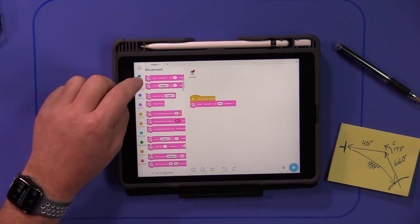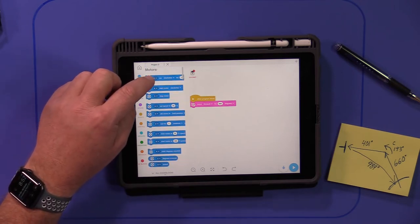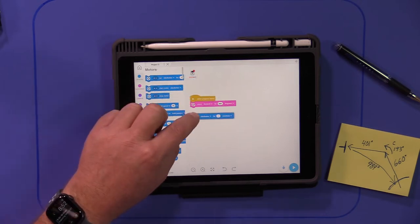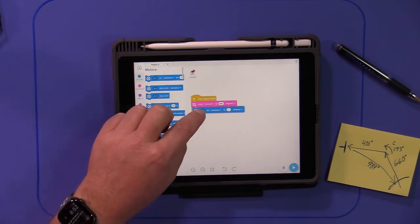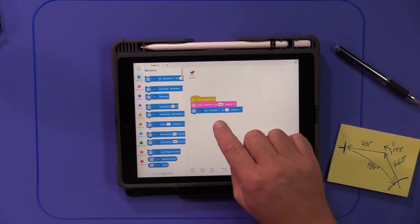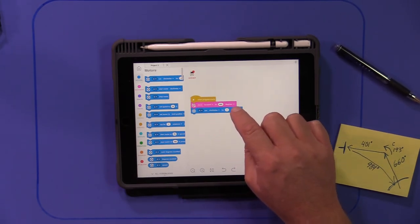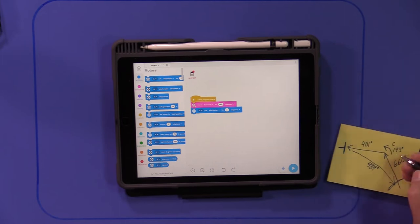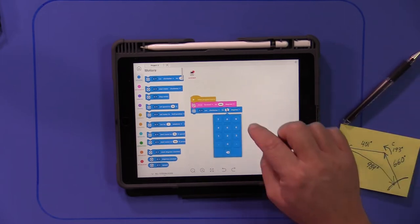Then I want to run just the C motor. So I'm going to go to blue here. All right, so let's go blue. Let's connect that in there. Okay, blue. Run. I'm going to change that to the C motor clockwise for, let's go degrees, and let's go 193 degrees. 193.